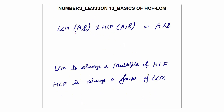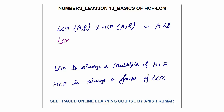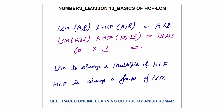A very important concept: LCM of two numbers multiplied by HCF of two numbers is always equal to the product of the two numbers. For example, LCM of 12 and 15 is 60, HCF is 3, and 60 into 3 = 180, which equals 12 into 15. Also, LCM is always a multiple of HCF, and HCF is always a factor of LCM. That was all for this lesson; the next lesson will continue with more on HCF and LCM.